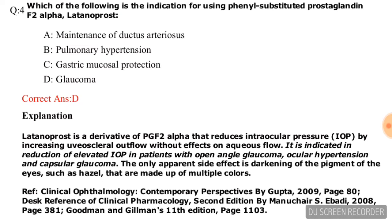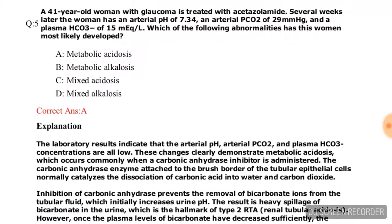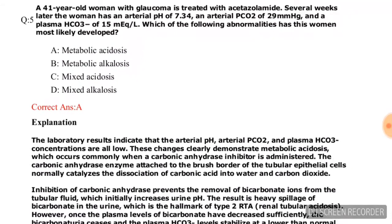Question number four: Which of the following is the indication for using a phenyl-substituted prostaglandin F2 alpha, latanoprost? Options are: maintenance of ductus arteriosus, pulmonary hypertension, gastric mucosal protection, and glaucoma. The correct answer is option D, that is glaucoma. The explanation is given and you can read it.